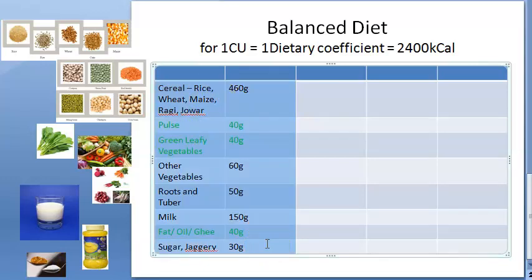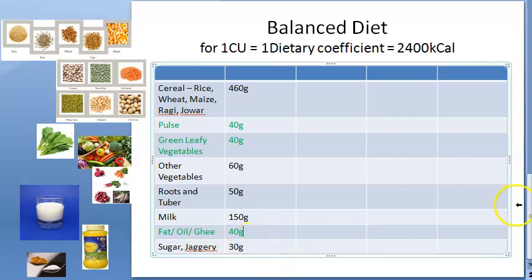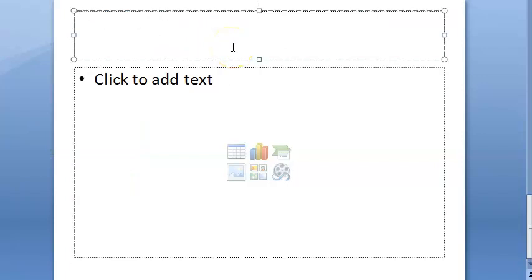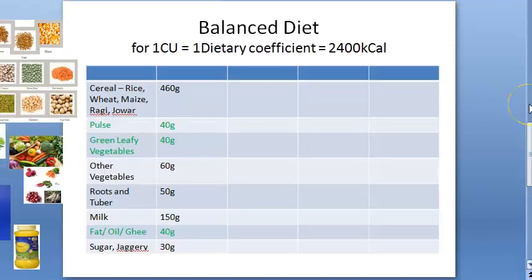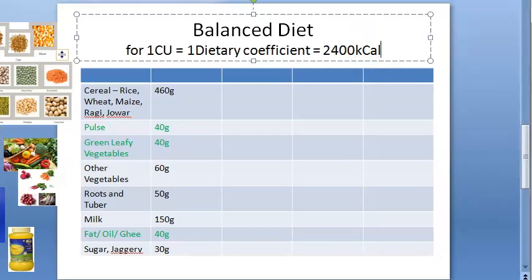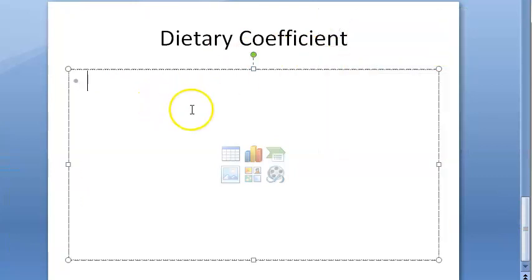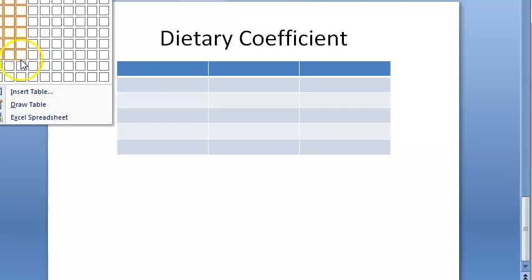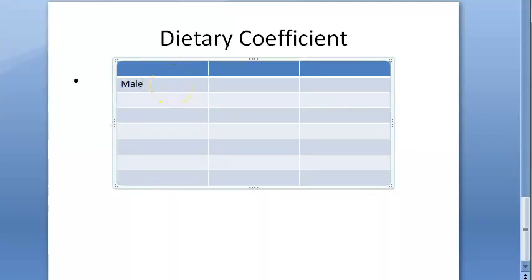For a male sedentary worker, the dietary coefficient is 1.0 (baseline). If he is a moderate worker, he needs 1.2 times this amount; if a heavy worker, 1.6 times. For an adult female sedentary worker, she requires 0.8 of this. Let us now make a table of these dietary coefficients.